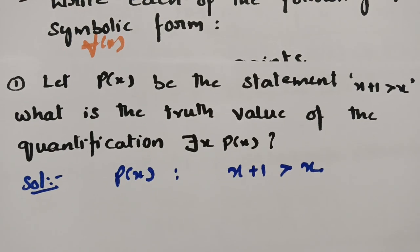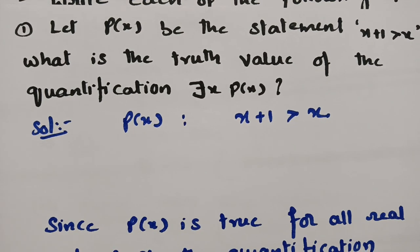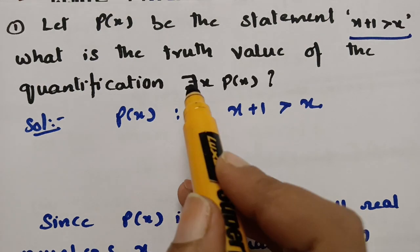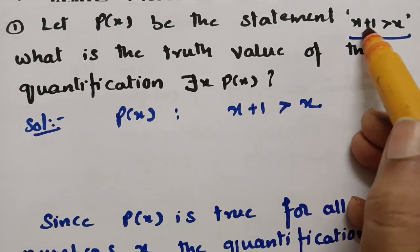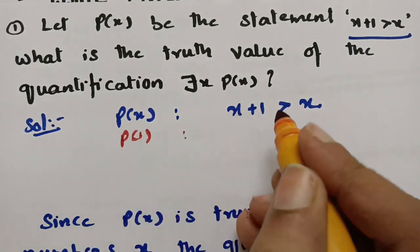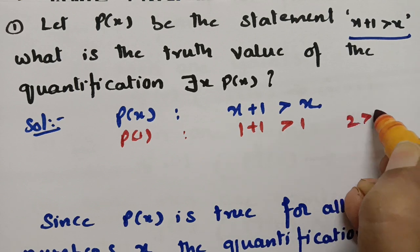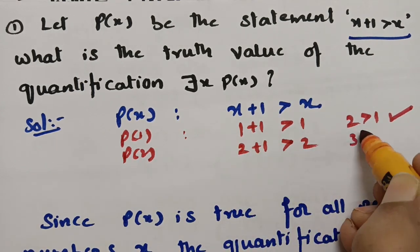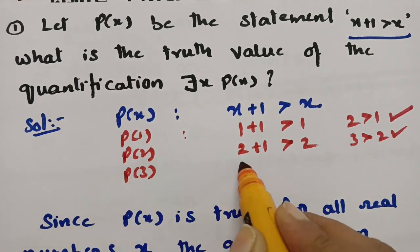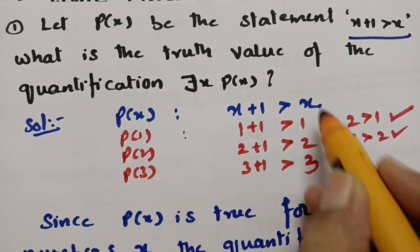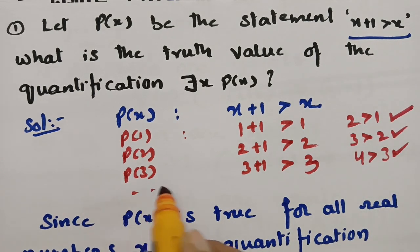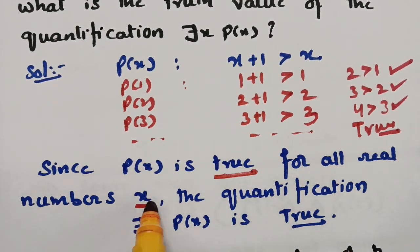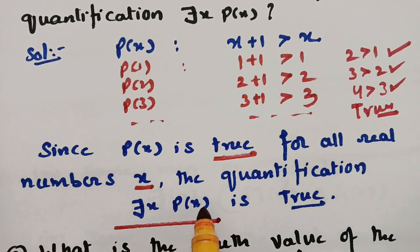Next question: let p(x) be the statement x + 1 > x. What is the truth value of ∃x p(x)? If x = 1: 1 + 1 = 2 > 1 — true. If x = 2: 2 + 1 = 3 > 2 — true. If x = 3: 3 + 1 = 4 > 3 — true. Each and every statement is true. Since p(x) is true for all real numbers x, the existential quantifier ∃x p(x) is true.